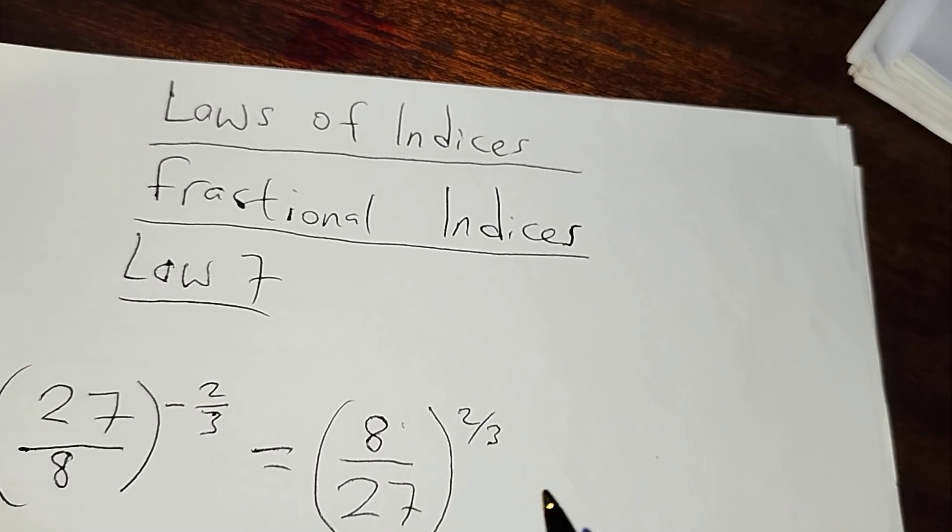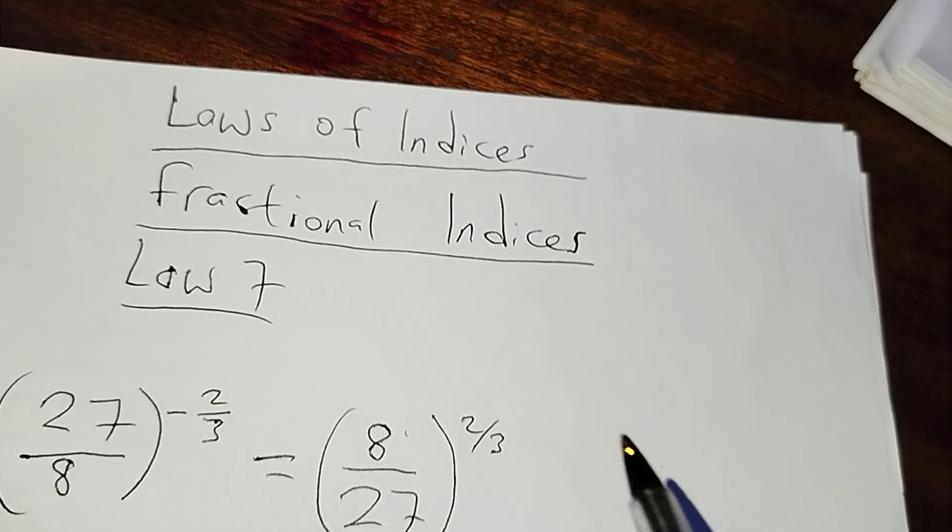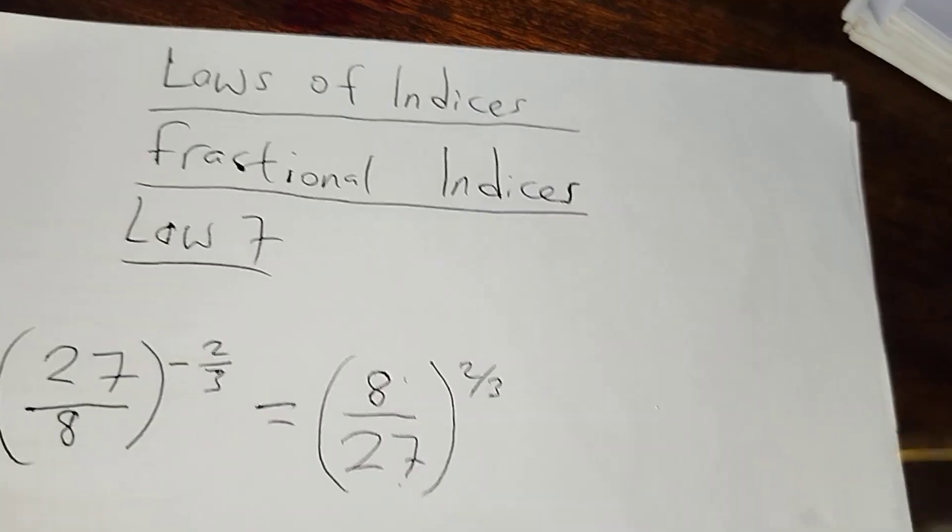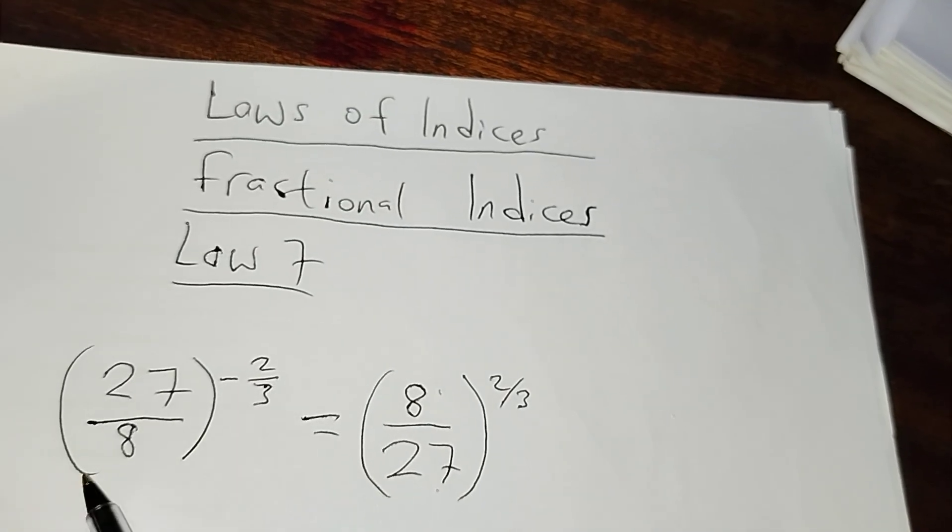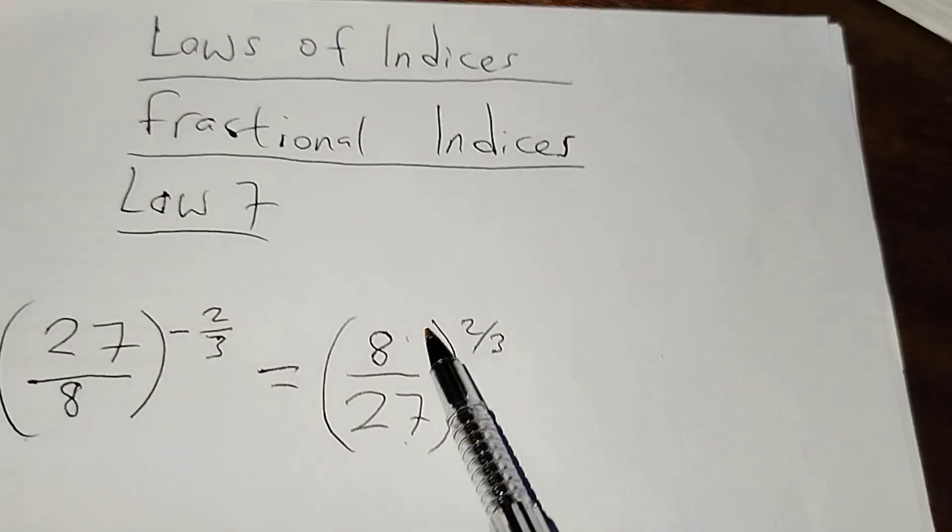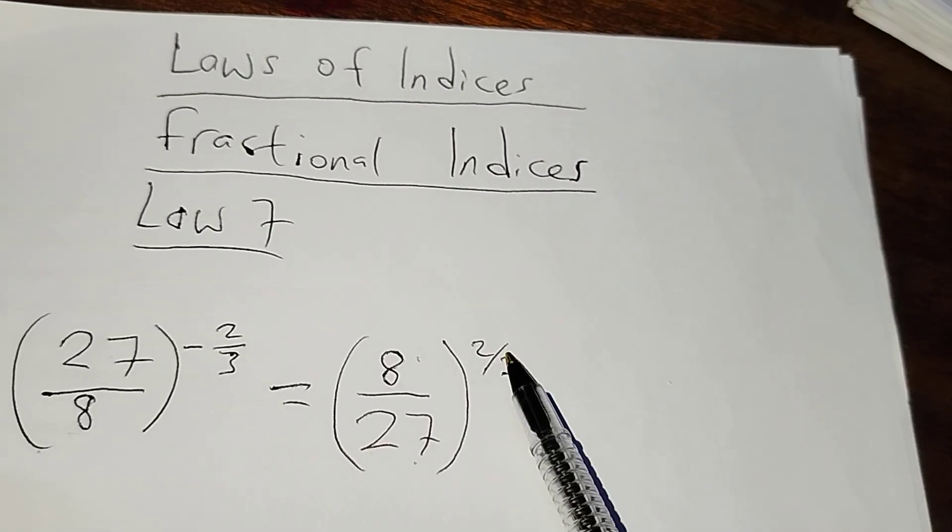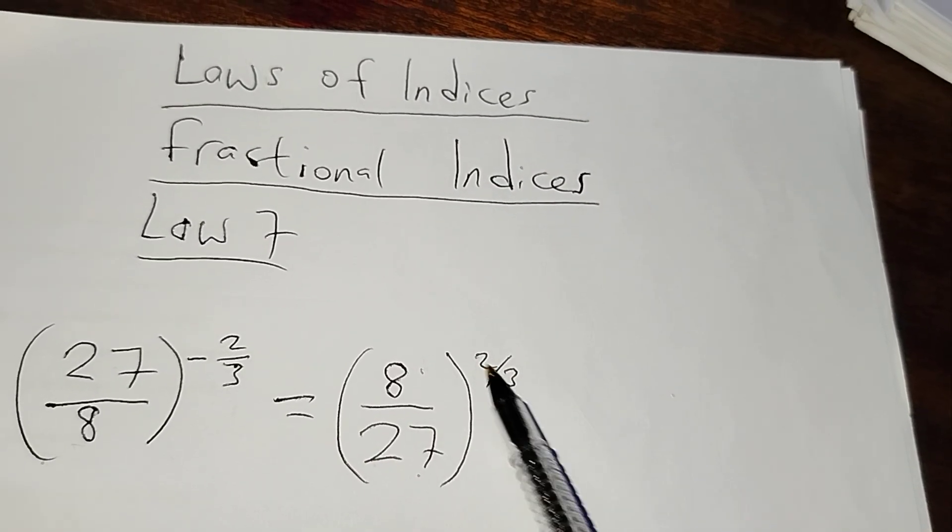I want you to take note that I inverted this fraction 27 over 8 and it became 8 over 27, but I did not invert or write the reciprocal of the fractional index.